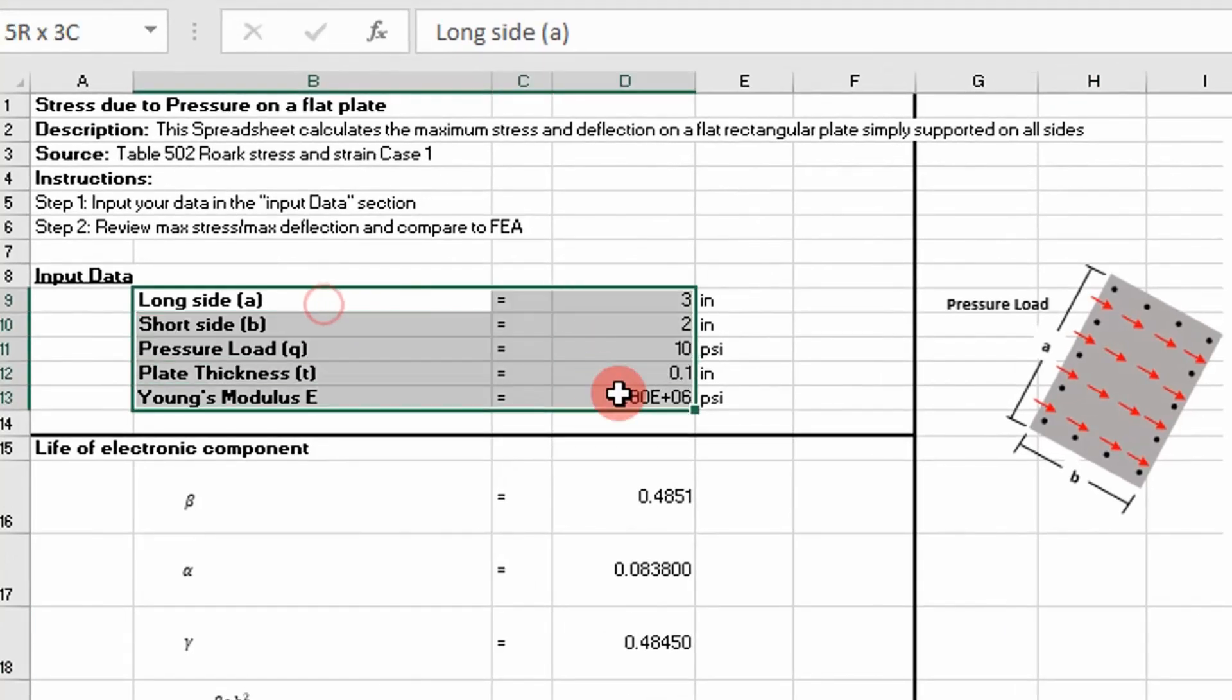We have our inputs right here, where A is going to be the length of our long side of a rectangular plate, and B is going to be the short side of our rectangular plate.